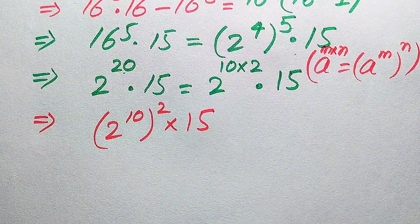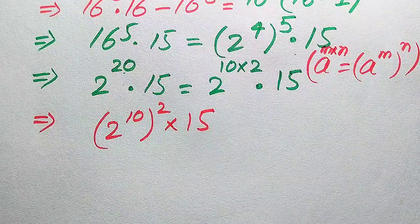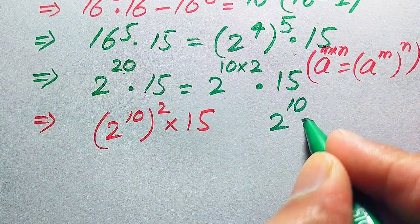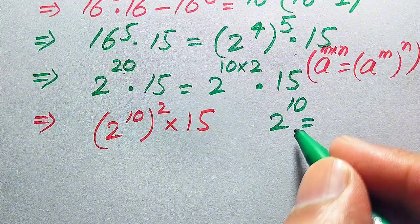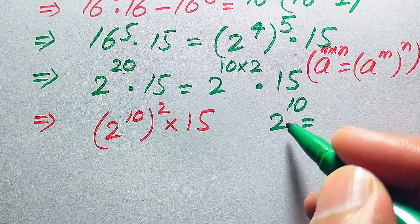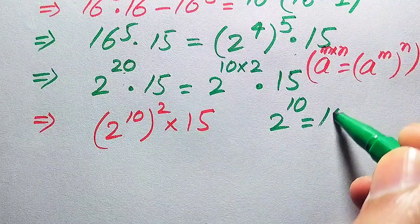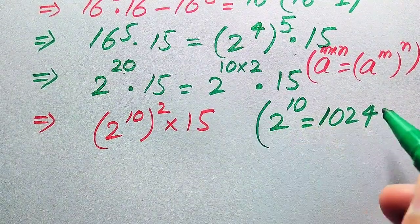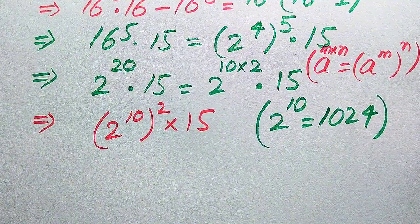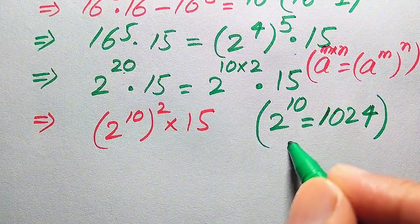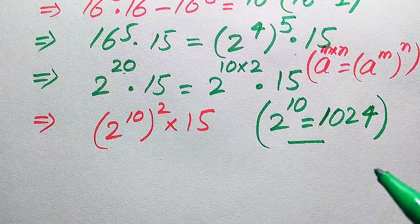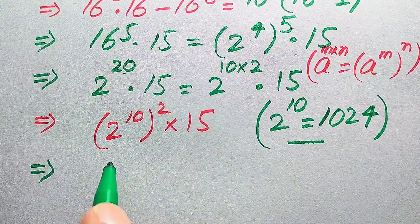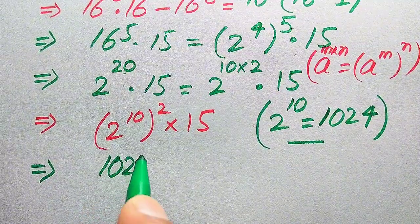Our next challenge is to find the value of 2 to the power of 10, which means multiplying 2 by itself 10 times. Using the traditional method of multiplication, 2 to the power of 10 equals 1024. I hope you can easily get this value without using the calculator.